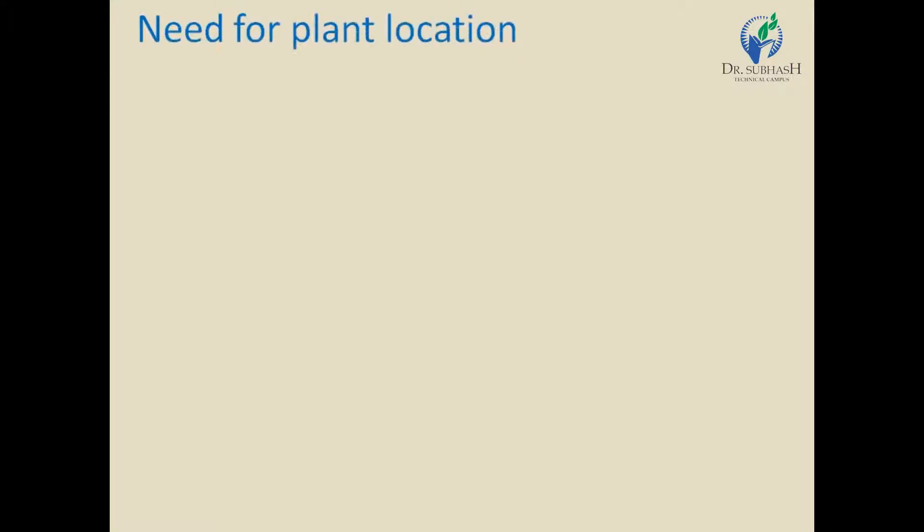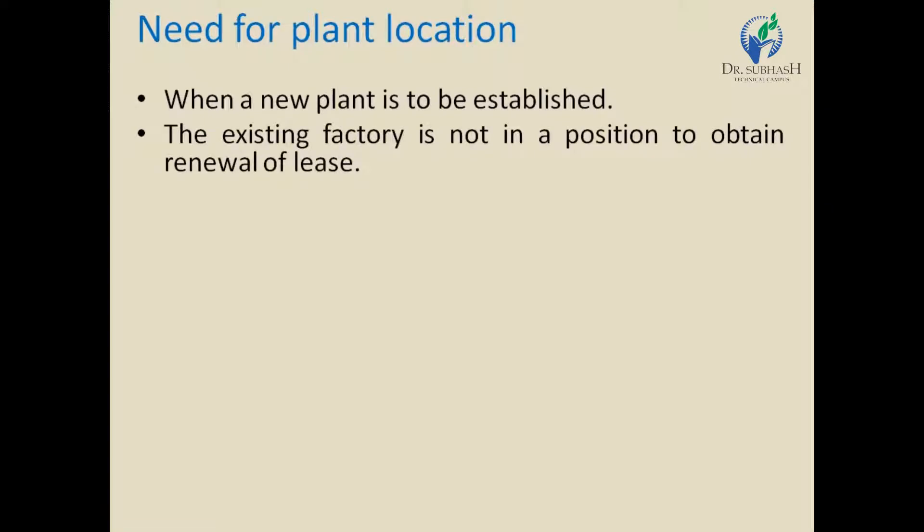The second topic is the need for Plant Location. The first point is when a new plant is to be established — one must select a place or site for the establishment of their plant. The second point is when the existing factory is not in a position to obtain the renewal of lease. For example, if they have done an understanding on lease for five years, after the completion of five years the site owner is not ready to renew that contract, then there may be a need for change in position of the existing factory.